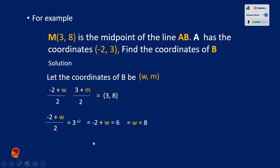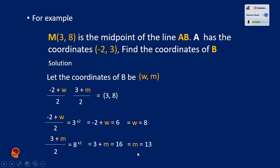Now we do the same for the other coordinate. We have 3 plus m all over 2 equals 8. Cross multiplying: 2 times 8 gives us 16, so 3 plus m equals 16. Taking 3 to the other side, it becomes a minus, giving us m equals 13. Therefore, the coordinates of endpoint B are (8, 13). Thank you very much.